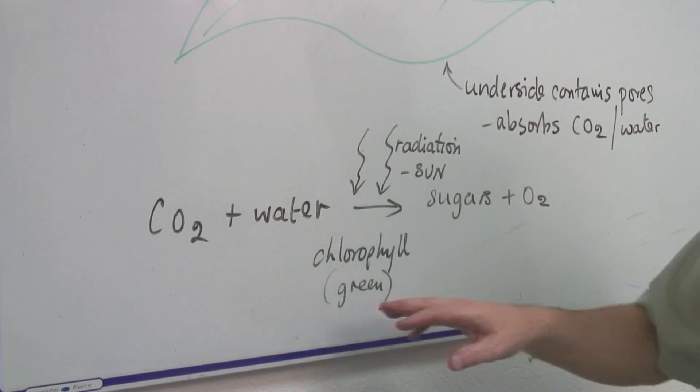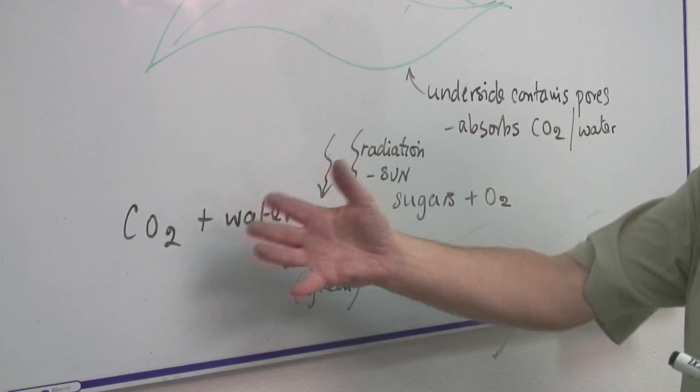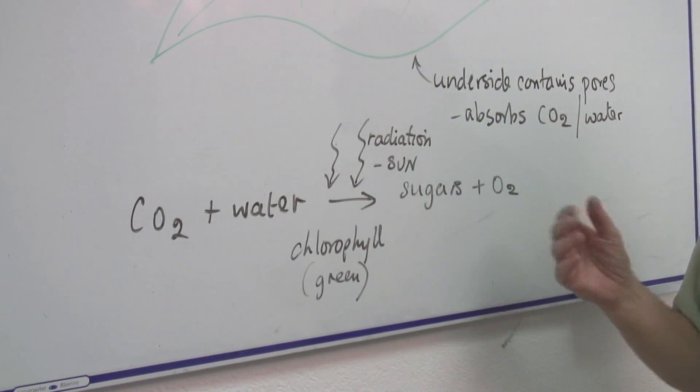The green is chlorophyll, which is a catalyst that enables radiation from the sun to allow this process to go ahead.